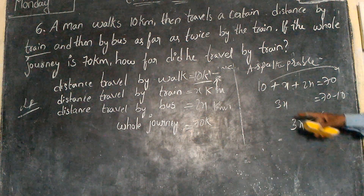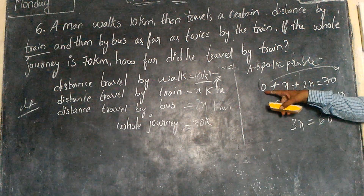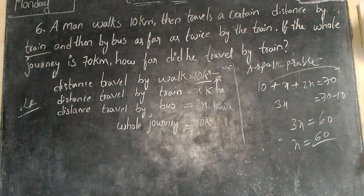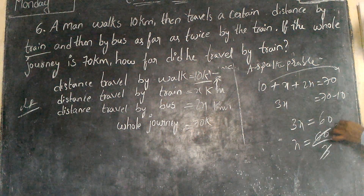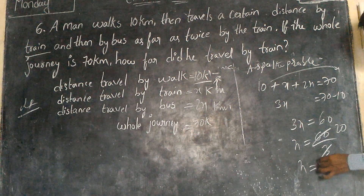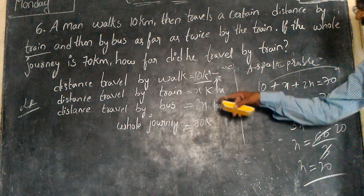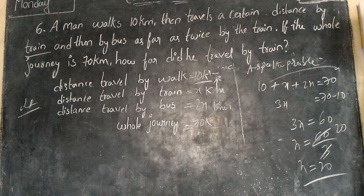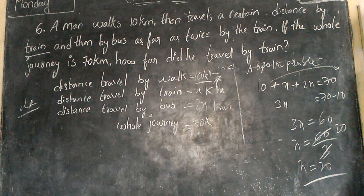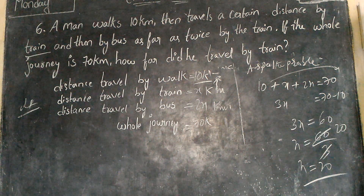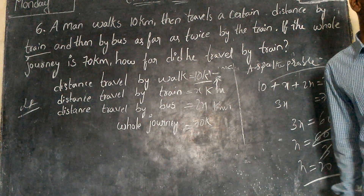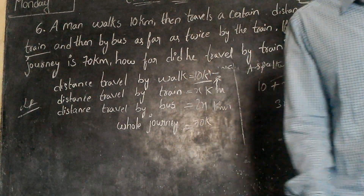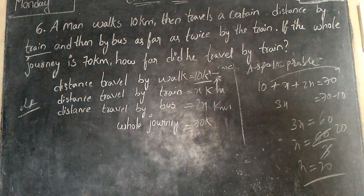So 3x equals 60, therefore x equals 60 divided by 3, which equals 20. X, the train journey, is 20 kilometers. The distance traveled by bus is 2x, which is 2 times 20, equal to 40 kilometers.